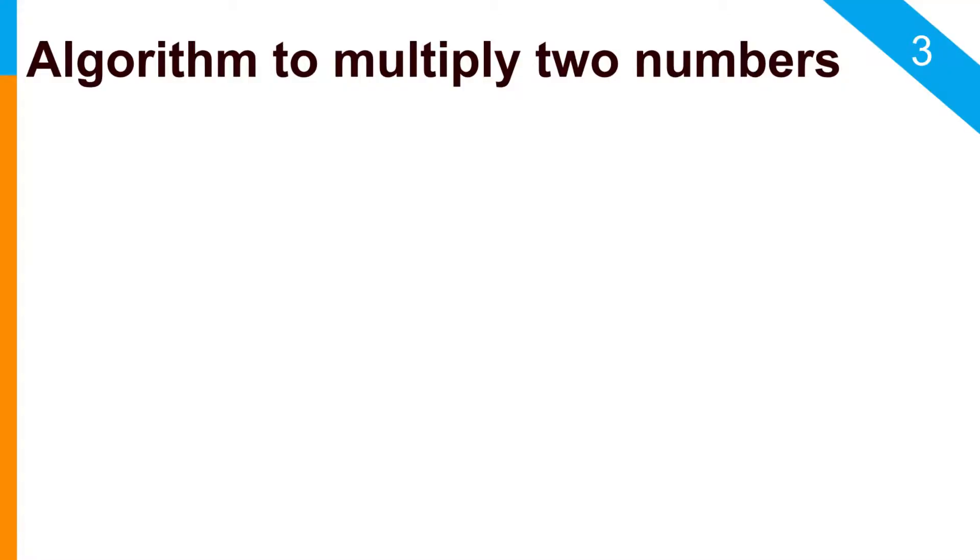So let us see how we can write an algorithm to multiply two numbers. When you have to multiply two numbers, we have two inputs, A and B, which are nothing but variables.